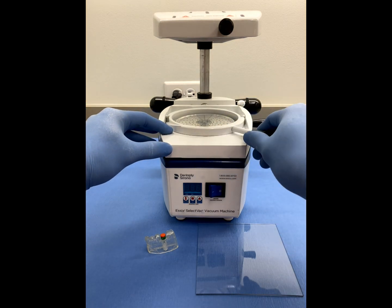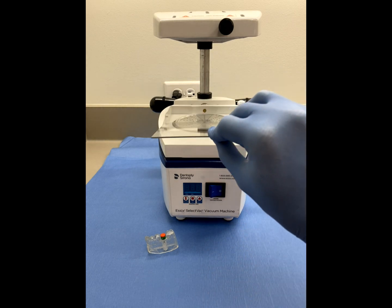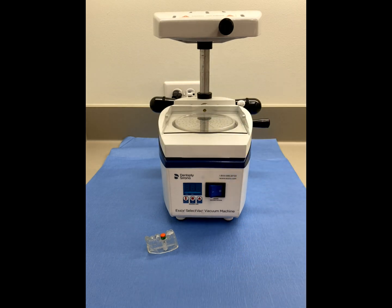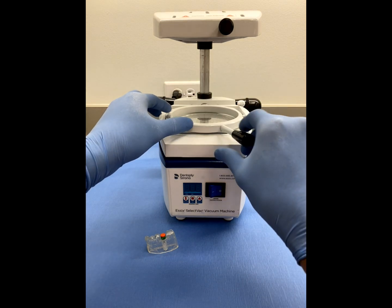Then, simply affix a 1.5mm to 3mm plastic sheet into the heating element platform in either a vacuum or pressure forming machine and allow the plastic to heat for the recommended time.